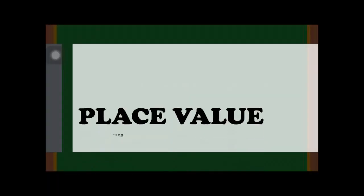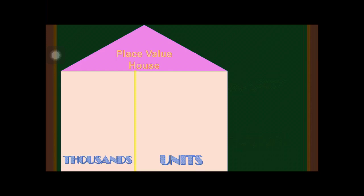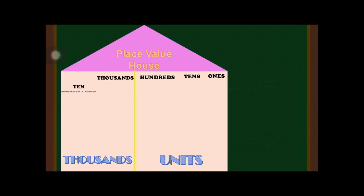Today we are going to study the place value of a five-digit number. Here we have the place value house. In the place value house we have two rooms: the units room and the thousands room. In the units room we have the ones place, tens place, and hundreds place, while in the thousands room we have the thousands place and the ten thousands place. We will focus on five-digit numbers only.